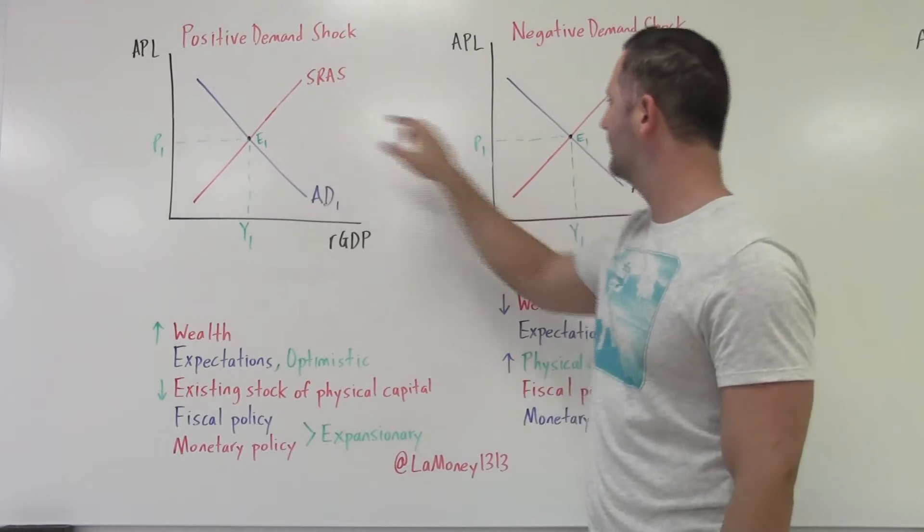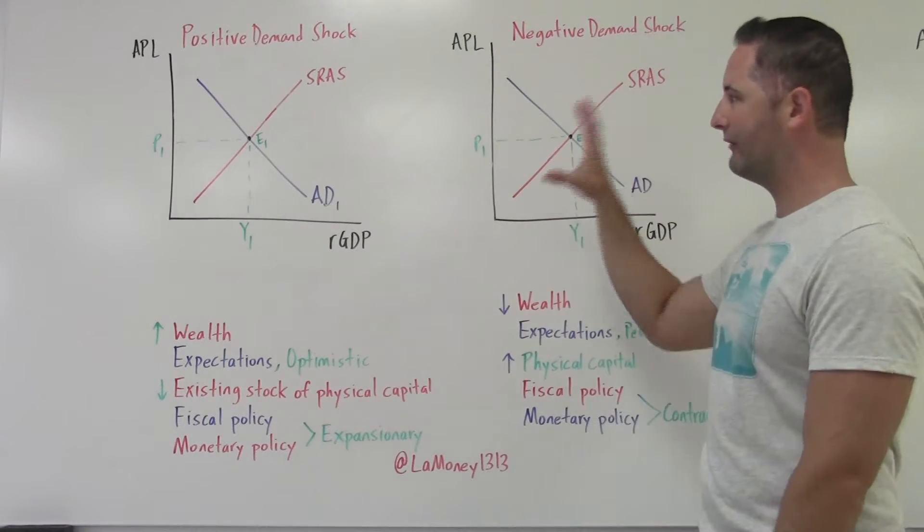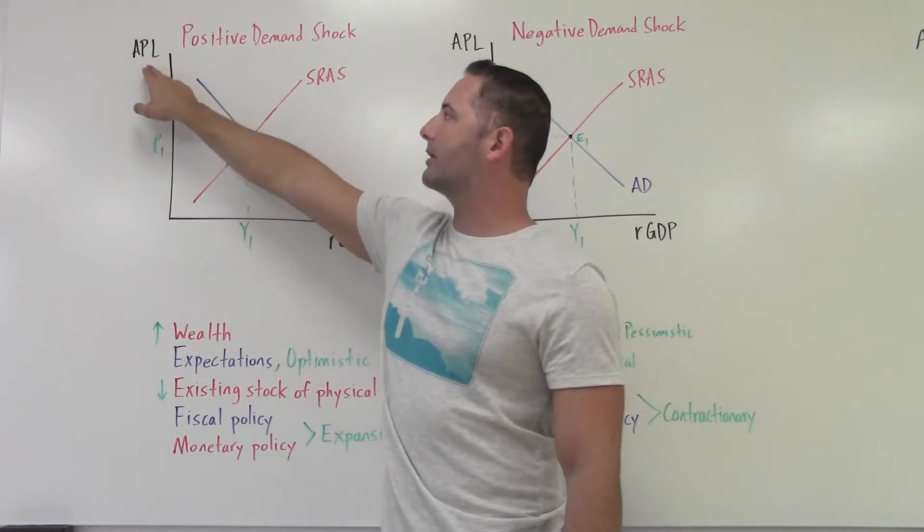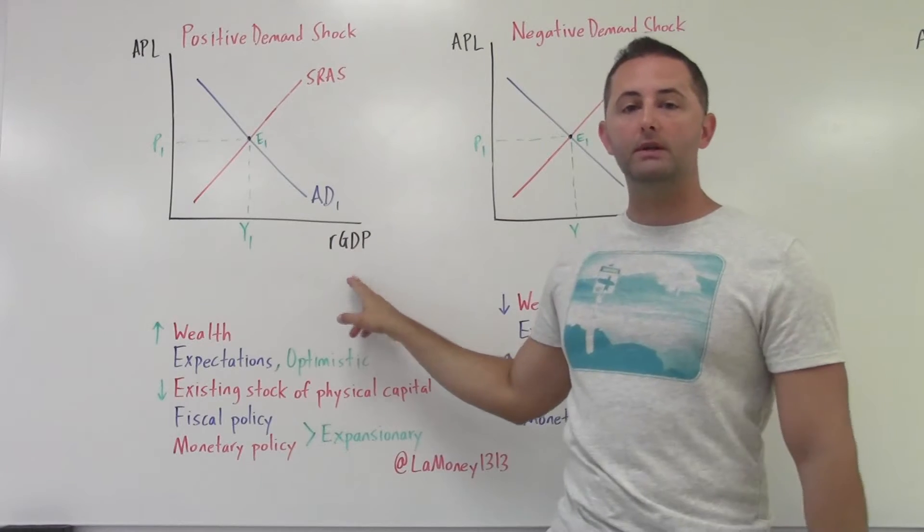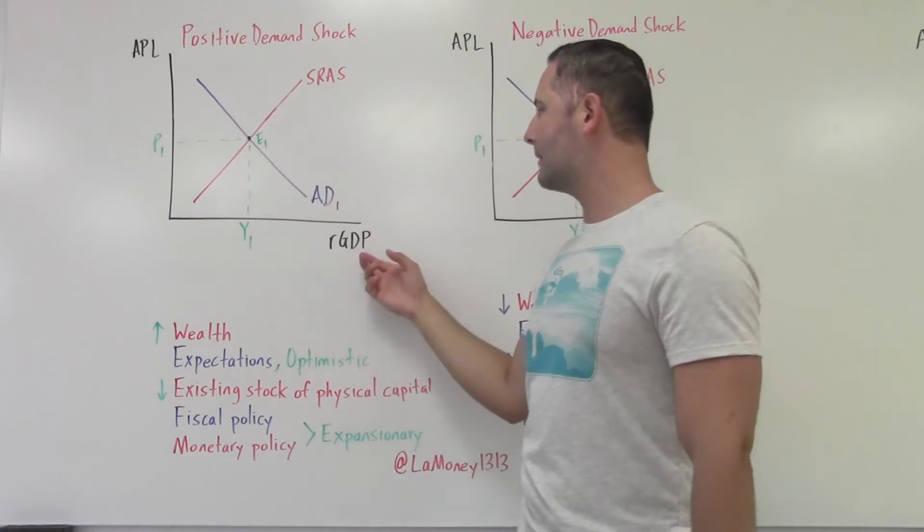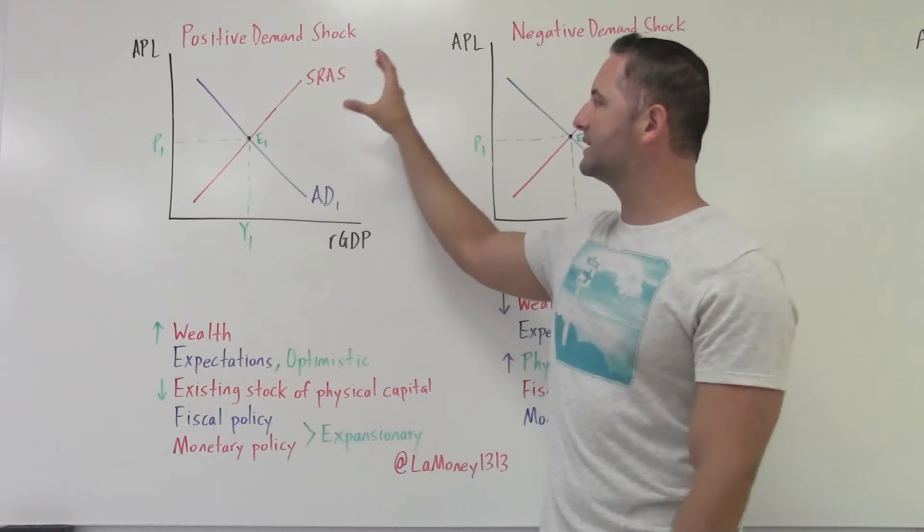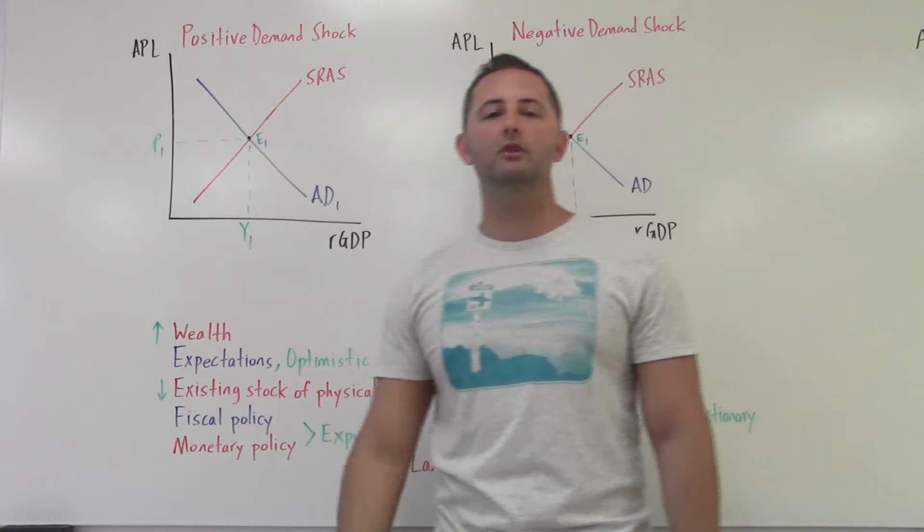They are both in short run equilibrium. So we have everything the same. Remember, our model is showing two things. We're comparing aggregate price level and output - how much things cost versus how much is being produced in an economy. And what we're looking at today is really simple: just what happens when we have a change in aggregate demand.